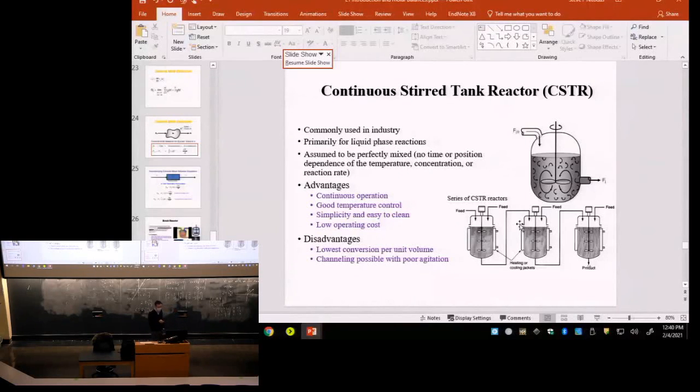The disadvantages - you have lowest conversion per unit volume as compared to other types of reactors or the batch reactor which was an advantage there. And you can have channeling if you have poor agitation. So if something happens to the stirring or if it's not efficient, you can have channeling to locations where the agitation is not good. So you don't have good conversion there. So you lose some of your reactants because they cannot react efficiently. That's why channeling results in lower productivity.